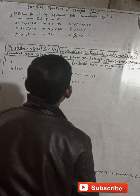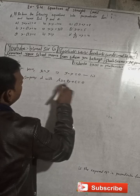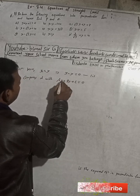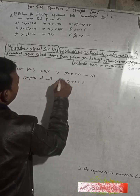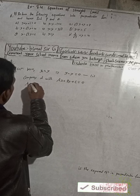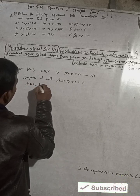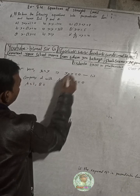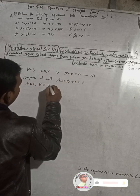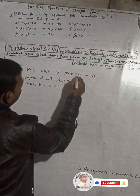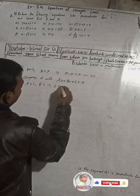So now when we compare equation one with ax plus by plus c equals 0, what we get is: a is equal to 1, b is equal to minus 1, and there is no constant term so c is equal to 0.